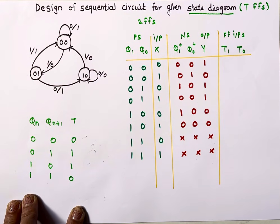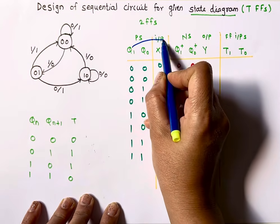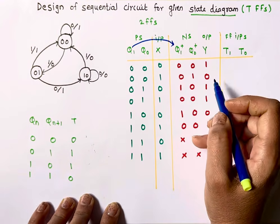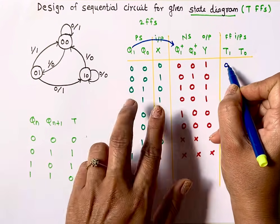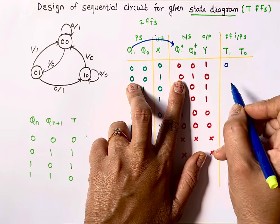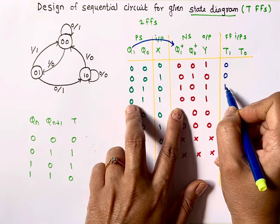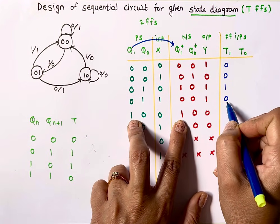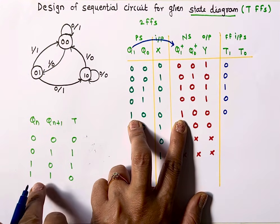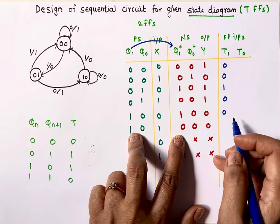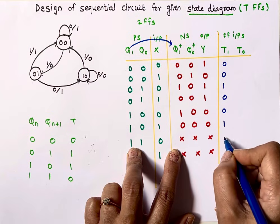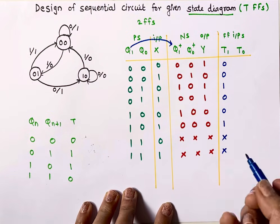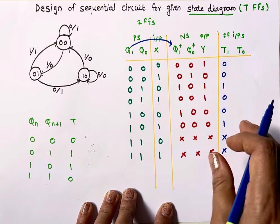Using this flip-flop excitation table I will write values for T1 by comparing Q1 with Q1+. For Q1: 0→0 gives T1=0; 0→0 gives T1=0; 0→1 gives T1=1; 0→0 gives T1=0; 1→1 gives T1=0; 1→1 gives T1=0; 1→0 gives T1=1; and for the don't care rows T1 is don't care, because when next state outputs are don't care, inputs can be anything — it is the designer's choice to consider them as 1 or 0.